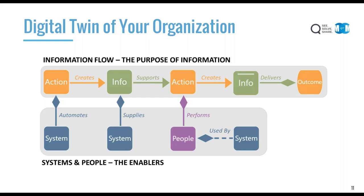We need to start by thinking about what is an organization, and we've managed to distill it down to four key entities: the work that gets done, the data and information that supports or is created by that work, the people who are doing the work, and the systems involved — systems used by people, systems that might automate work, and systems supplying information.